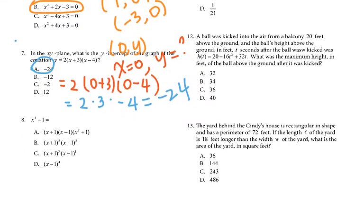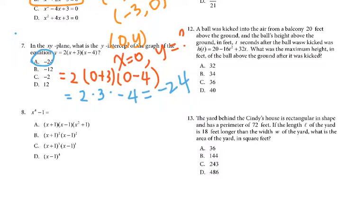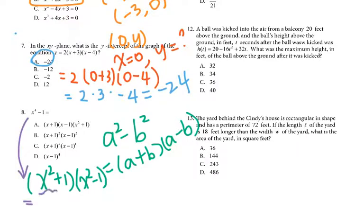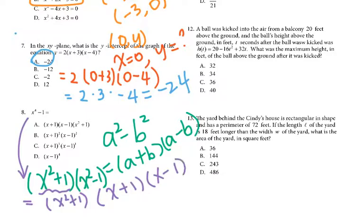For number 8, this is essentially a factoring problem. You can use the formula a squared minus b squared equals (a plus b)(a minus b). For x⁴ minus 1, factor as (x² plus 1)(x² minus 1). The term x² plus 1 cannot be factored further, so bring it down. Then x² minus 1 factors as (x plus 1)(x minus 1). The answer is A.